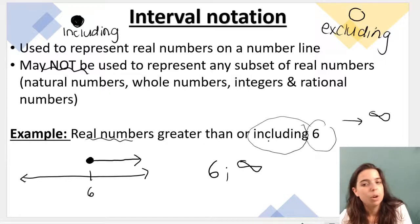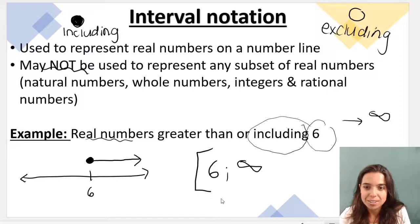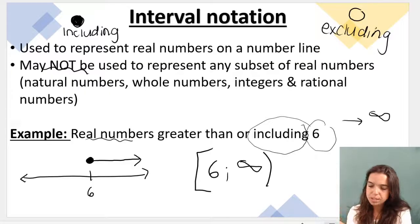Now, be careful. We're including the 6. When we include a number, we use square brackets. And when it comes to infinity, we always use our round brackets. We don't have a definite value for infinity, so we're just going to use our round brackets.